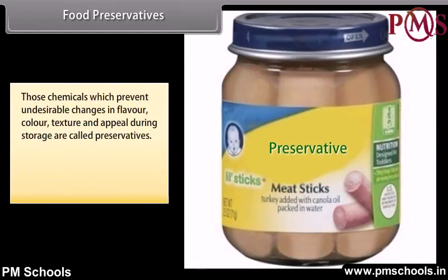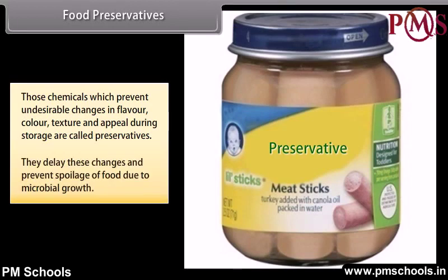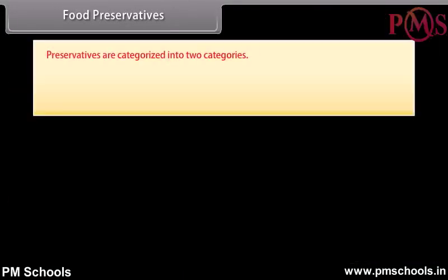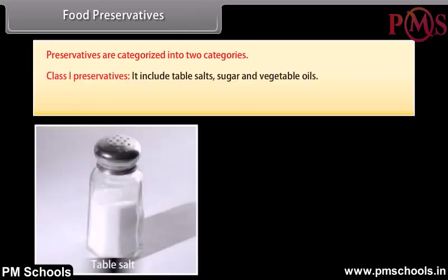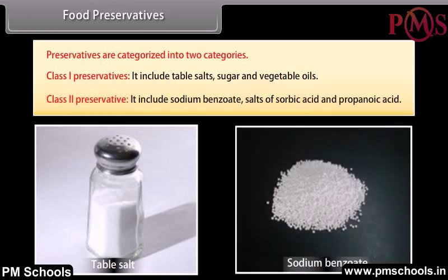Food preservatives: Those chemicals which prevent undesirable changes in flavor, color, texture, and appeal during storage are called preservatives. They delay these changes and prevent spoilage of food due to microbial growth. Preservatives are categorized into two categories: Class 1 preservatives include salt, sugar, and vegetable oils; Class 2 preservatives include sodium benzoate, salts of sorbic acid, and propanoic acid.